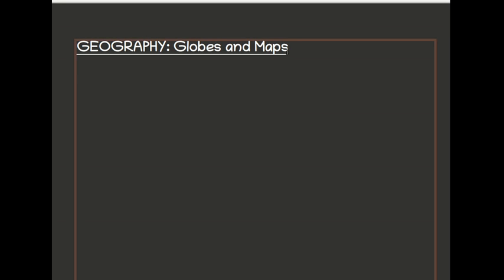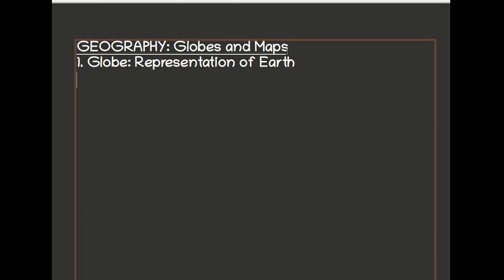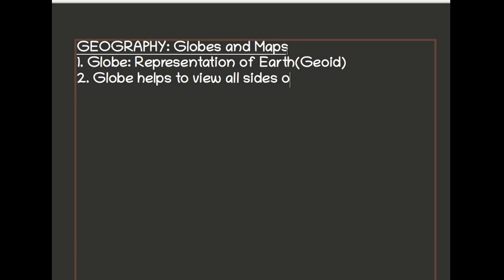So let's take notes on what we learned. The globe is the representation of earth, and we remember that the earth is geoid in shape. The difference between globes and pictures is that the globe helps us view all sides of the planet, whereas in pictures we can only see one side at a time.